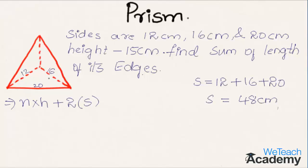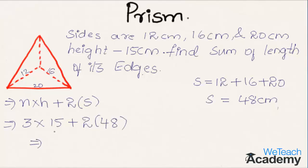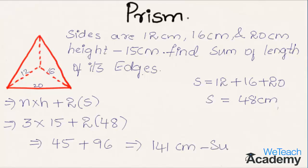Substituting into the formula: n = 3, h = 15, s = 48. So we get 3 × 15 + 2 × 48 = 45 + 96 = 141 centimeters as the sum of the lengths of its edges.